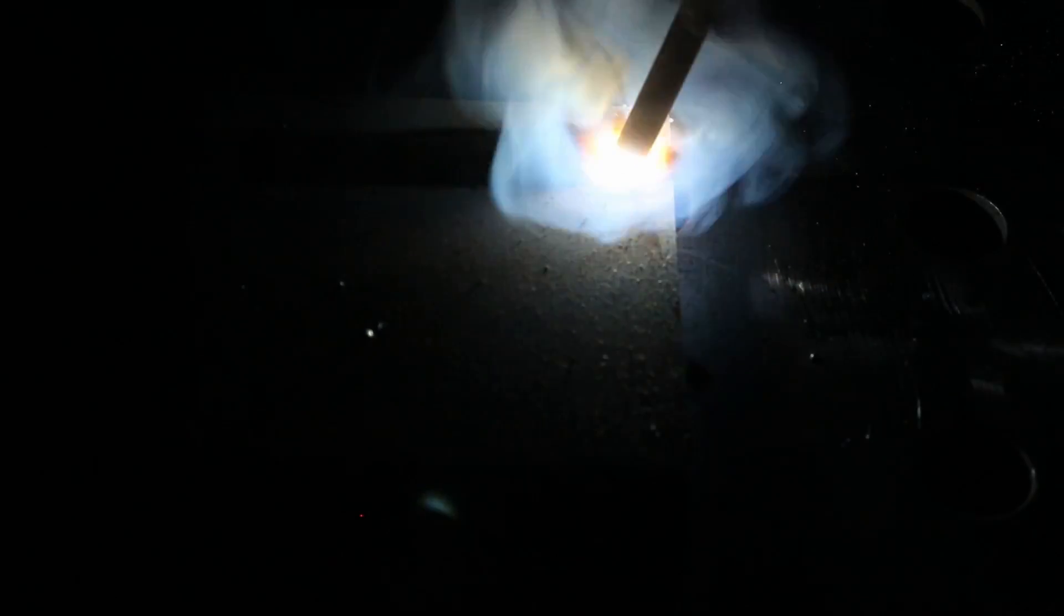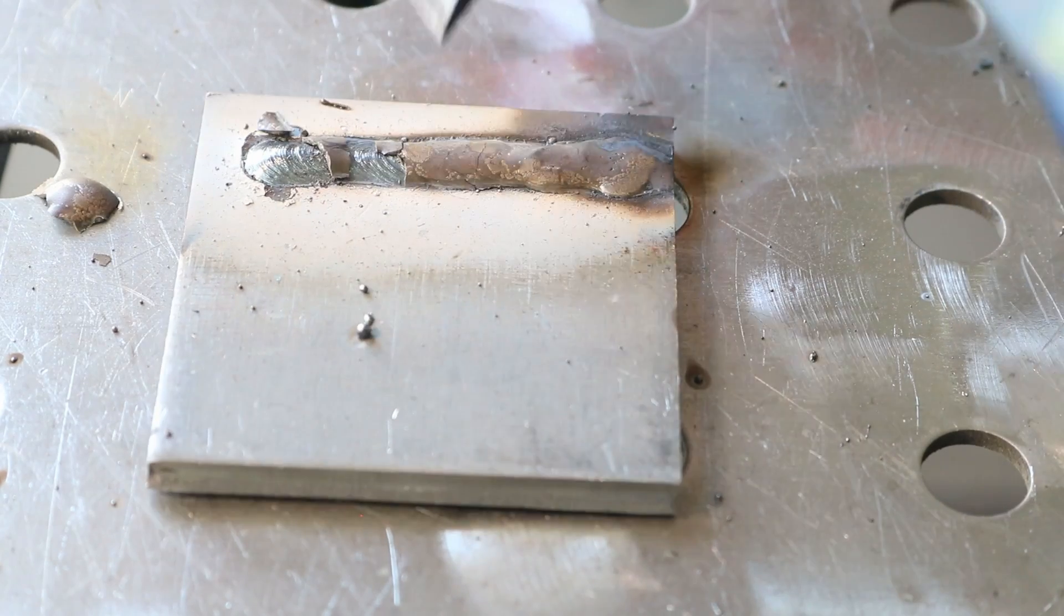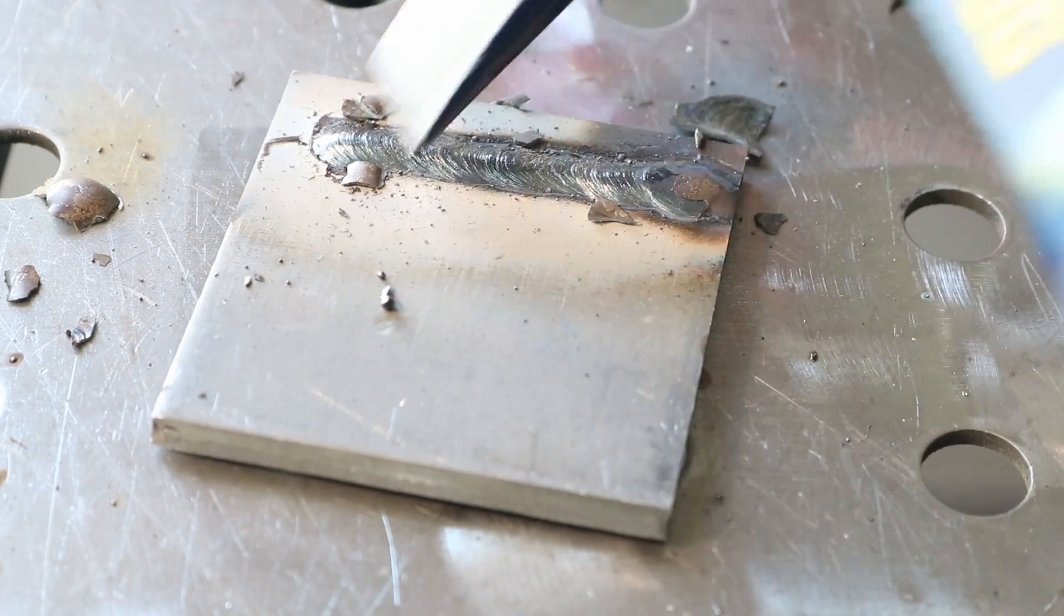Here I'm just going to demonstrate a little bead on plate with this 7018. And you can see it just runs nice and smooth. You can almost just drag it along there. And it'll just fill in. It's a really nice rod to run. I really enjoy running 7018. So here you can see I'll just chip some of this slag off here and you get a really nice bead profile.